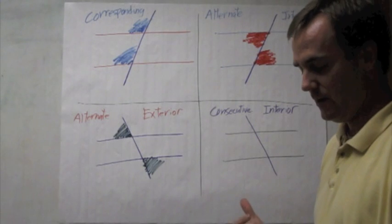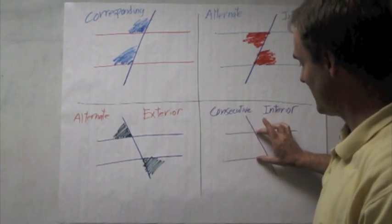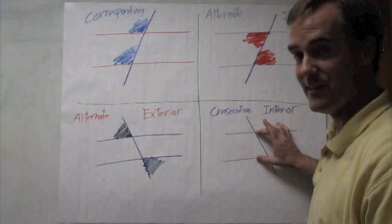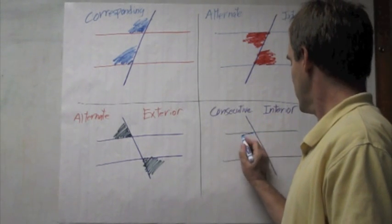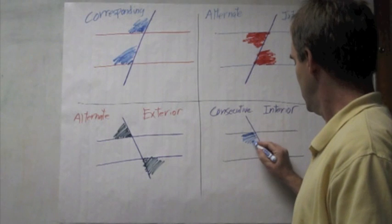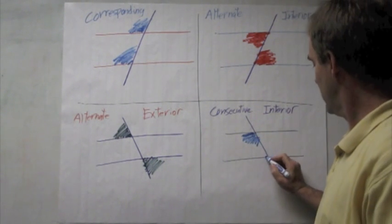And consecutive interior. Well, interior, of course, tells us that we're inside the two lines. And consecutive tells us we're on the same side. So, if one of them is this one. The other one is this one.